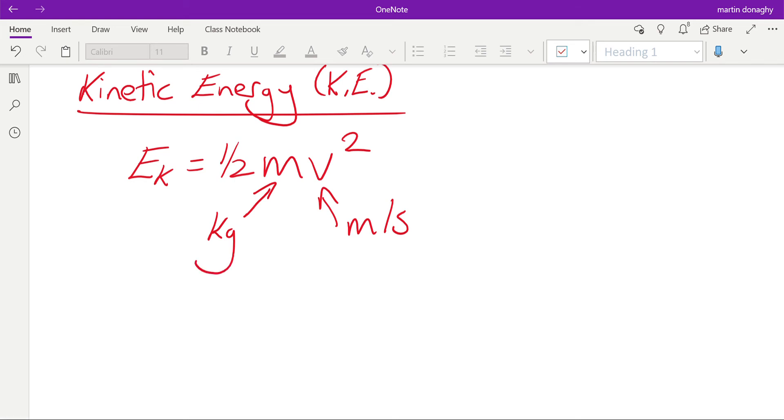The next type of energy we're going to look at is kinetic energy, which is just another name for movement energy. Sometimes shortened to KE or E with subscript K for kinetic energy. Once again, the key thing to remember is that the mass in this equation always has to be in kilograms.